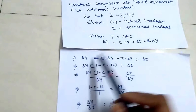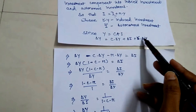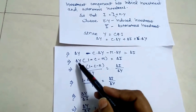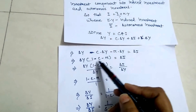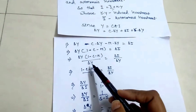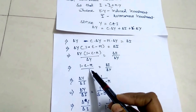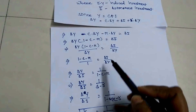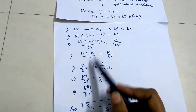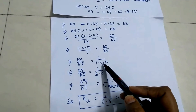Rearranging: change in Y minus C into change in Y minus r into change in Y equals change in I. Taking change in Y as common: change in Y times (1 minus C minus r) equals change in I. Dividing both sides, we get 1 minus C minus r divided by 1 equals change in I divided by change in Y. Making change in Y the subject gives 1 divided by (1 minus C minus r).